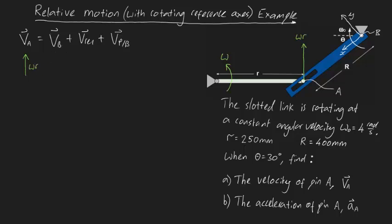Now let's consider V_B. Because we've defined point B to be this pin, the velocity of B will be zero — the pin isn't going anywhere, so no velocity vector is associated with it. Now let's talk about V_rel, which is the velocity of point A relative to our rotating link. We don't know whether point A is moving up or down the slot, so let's assume it's moving down the slot at this instant with velocity V_rel.